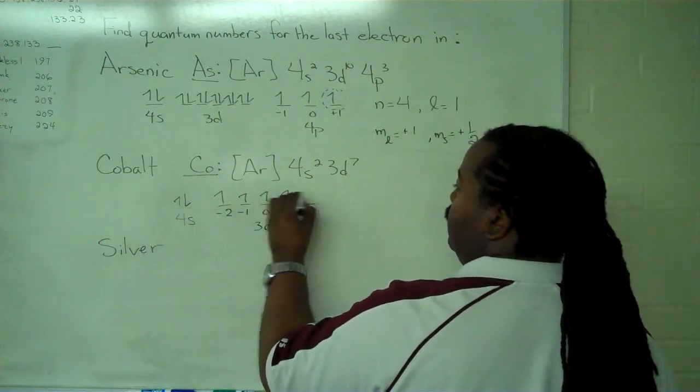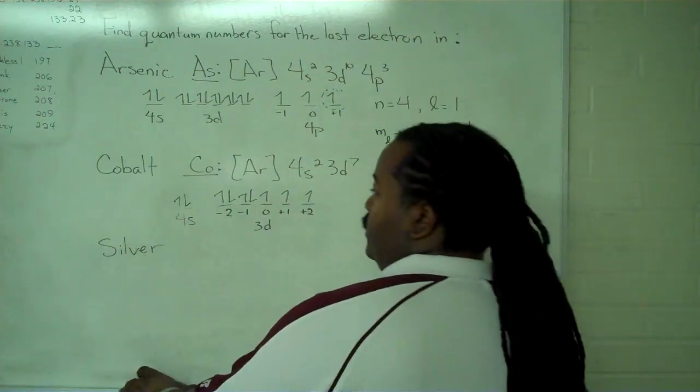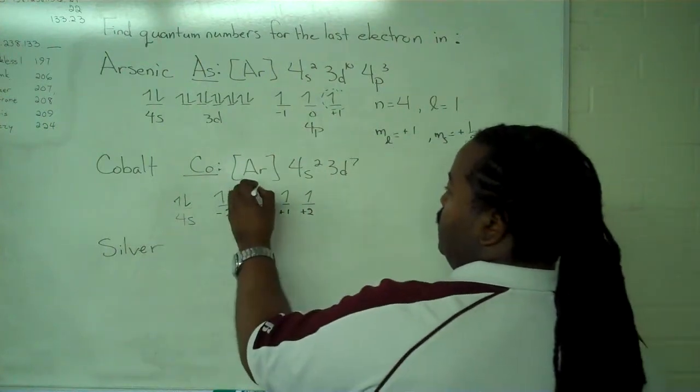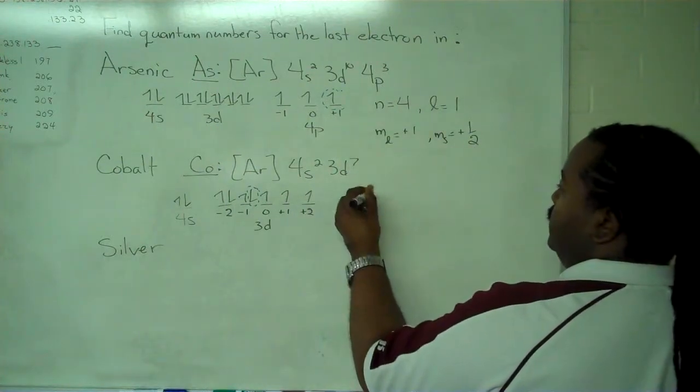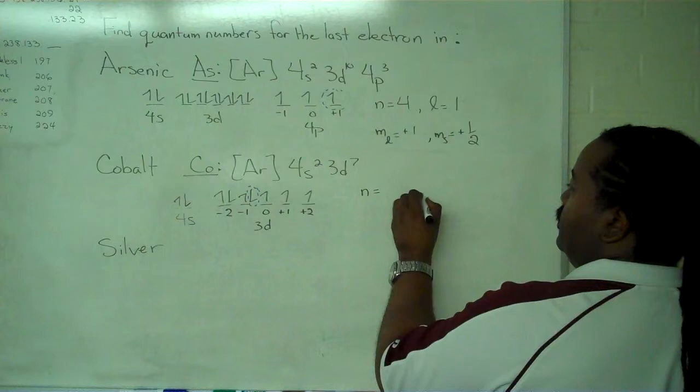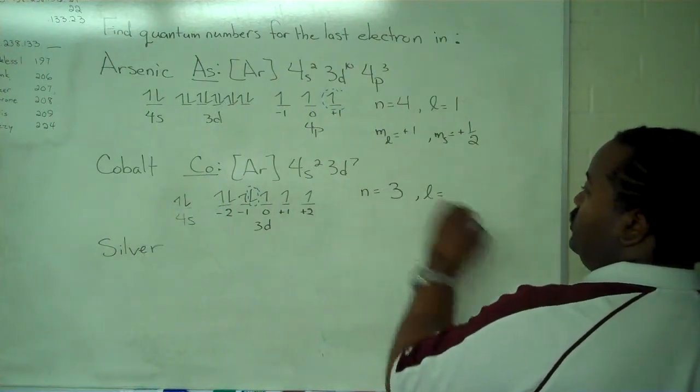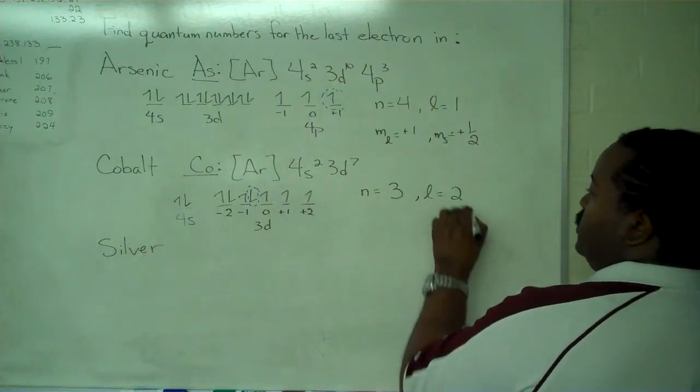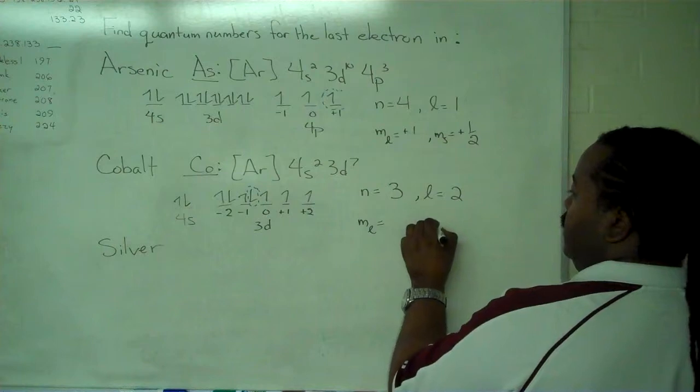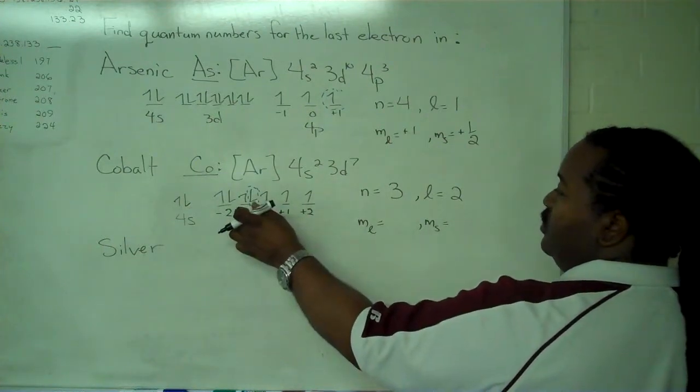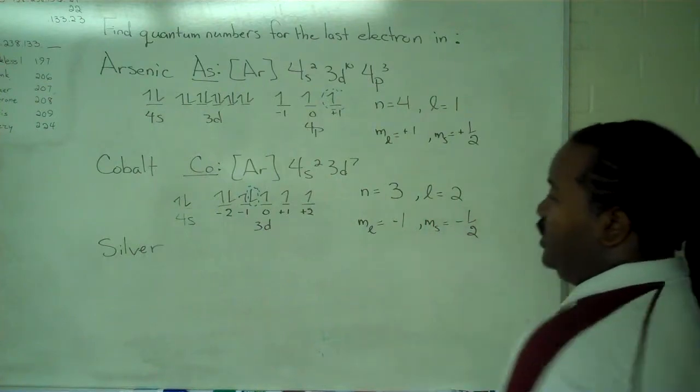1, 2, 3, 4, 5, 6, 7. So, this becomes the one that we're interested in, and we can read off its quantum numbers. For our principal and secondary, because it's 3d, n equals 3. d means that l equals 2. For our magnetic and spin, we have minus 1 for magnetic, and spin down means minus 1/2.